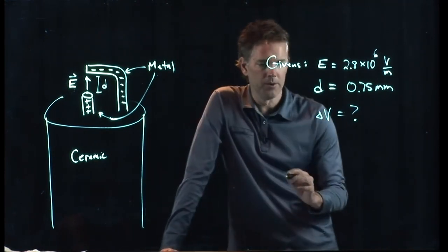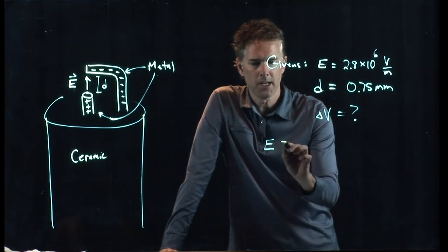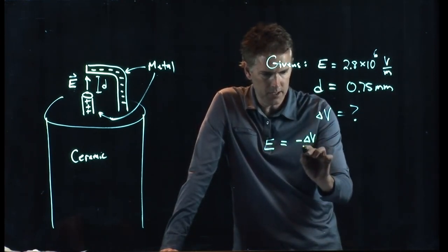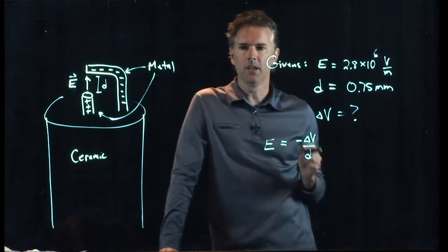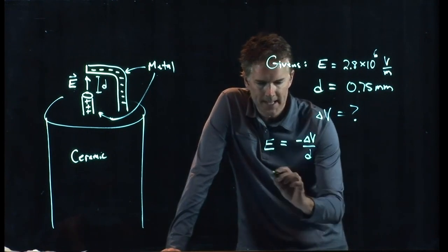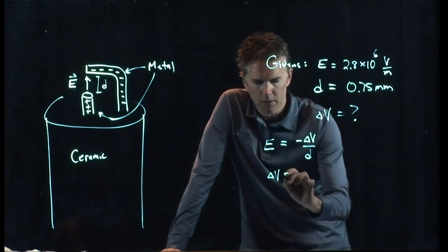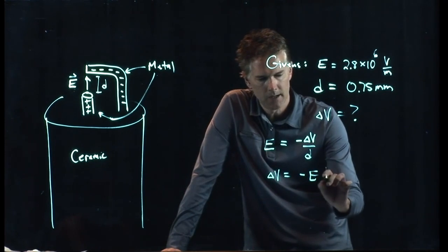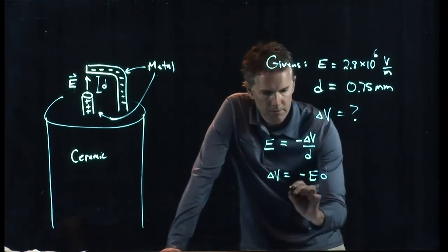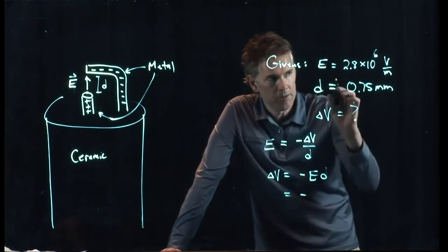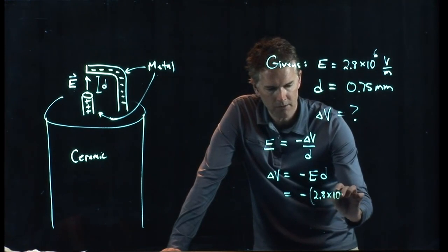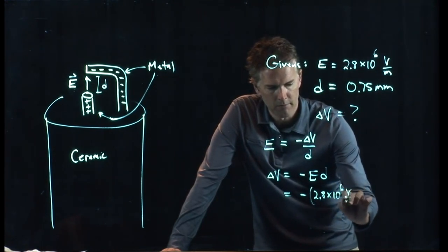Let's calculate what delta V is required to generate those fields. Alright, how do we do it? Well, we go back to our relationship for E. E was negative delta V divided by the distance D. And so delta V is going to be negative E times D. And I have those numbers, right? E we said is 2.8 times 10 to the 6 volts per meter.